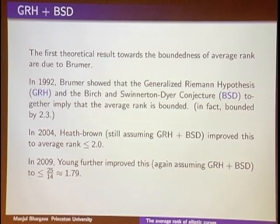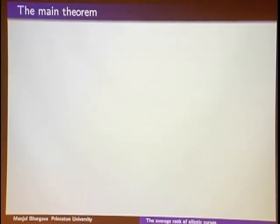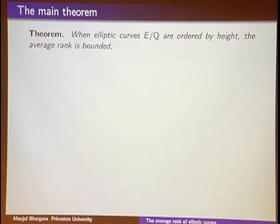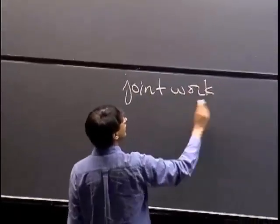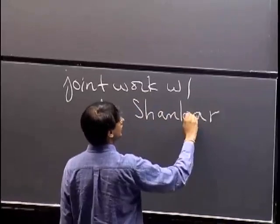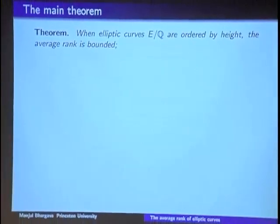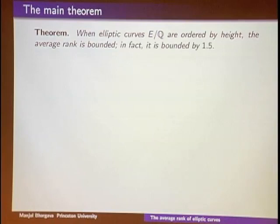What I want to do in this lecture is give an unconditional proof that the average rank of elliptic curves is bounded. This is joint work with Ariel Shankar, a graduate student at Princeton. We prove that when elliptic curves E over Q are ordered by height, the average rank is in fact bounded unconditionally — and the bound we get, 1.5, is actually better than the conditional bounds obtained assuming GRH and BSD.